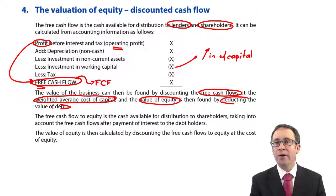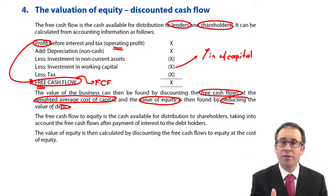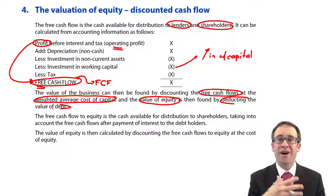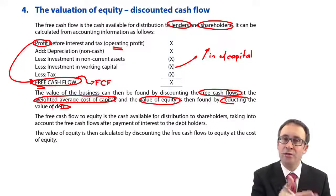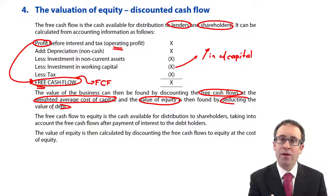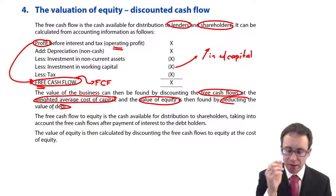So do be very careful: discount the free cash flows at the WACC — that gives you the value of the business, or the entity, which equals the value of equity plus the value of debt. To get the value of equity, deduct the value of debt. Practice the question and you'll soon get used to it; we'll see a question in the next video.